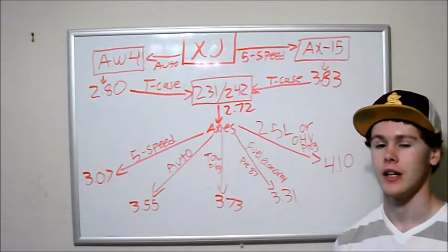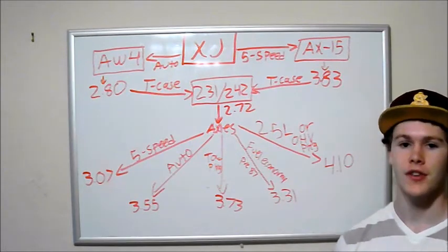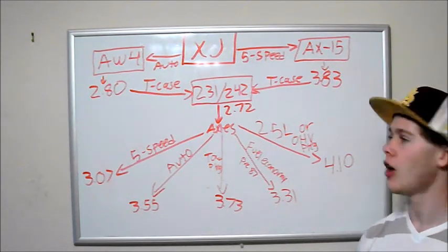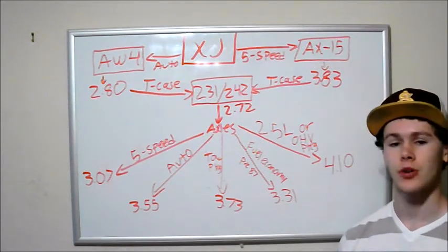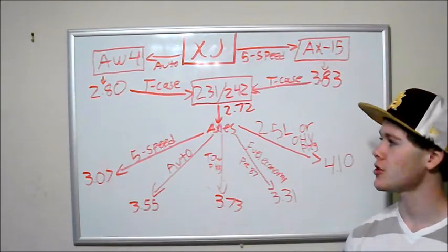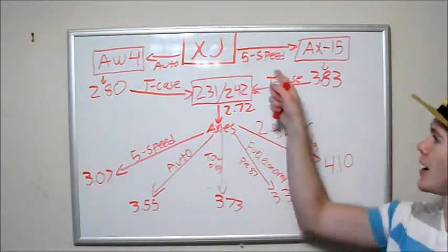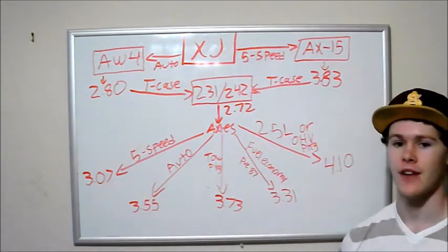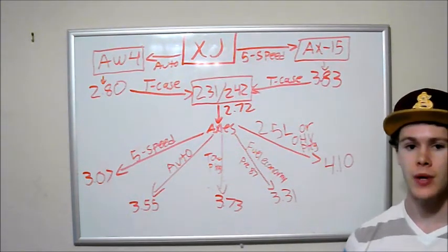So now that we know how to calculate our crawl ratio, what I've done here is I made a little flow chart that has all the different options that the XJs had and all the ratios for each. So we'll start off with transmission. If you have an automatic, you most likely have an AW4 transmission which has 2.80 ratio. If you have a 5 speed, you pretty much have an AX15 transmission which has a 3.83 first gear ratio.